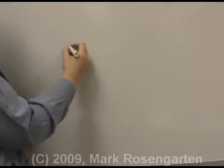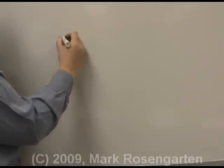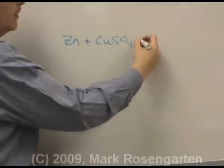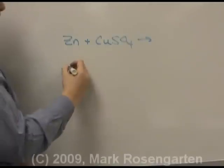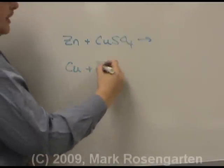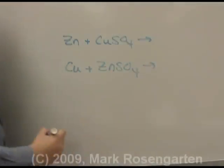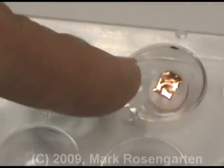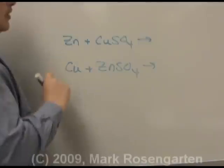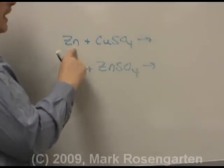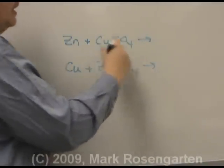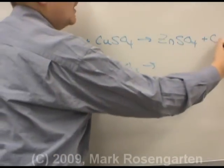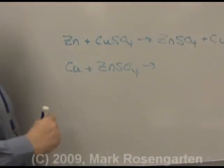We tried to carry out two single replacement reactions: we reacted zinc plus copper sulfate, and we reacted copper plus zinc sulfate. The zinc replaced the copper, but the copper was unable to replace the zinc. Therefore, zinc, being the more active metal, was able to replace the copper to form zinc sulfate, and the copper went off by itself to form microscopic crystals that appeared black. The second reaction was unable to happen.